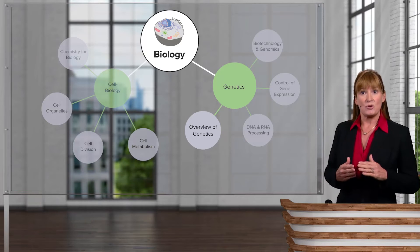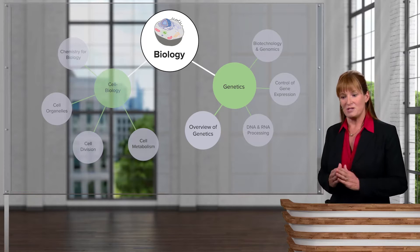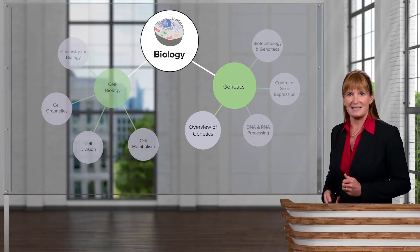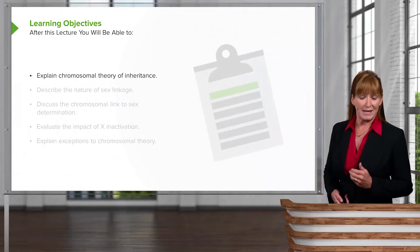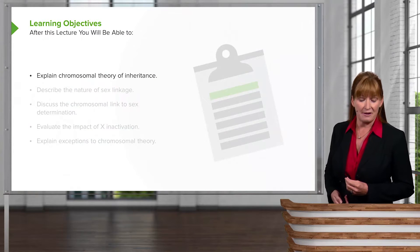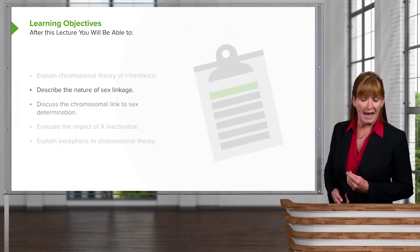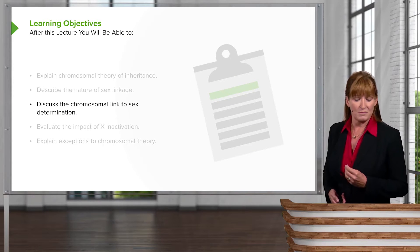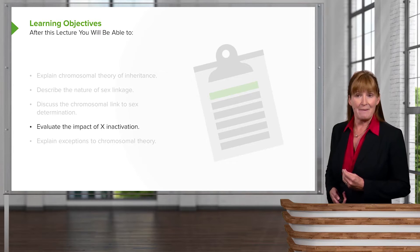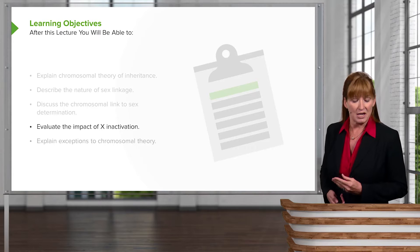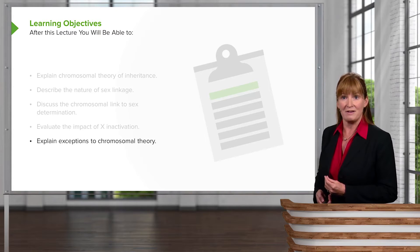So in this lecture, we will explore chromosome theory — how we understood the existence of chromosomes — as well as sex linkage. By the end of the lecture, you should be able to explain the chromosomal theory of inheritance, describe the nature of sex linkage, discuss how chromosomes are linked to sex determination, evaluate the impact of X-inactivation, and explain exceptions to chromosomal theory of inheritance.